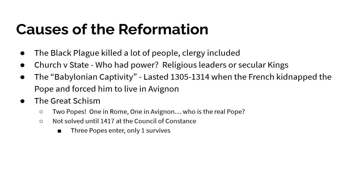This whole thing isn't going to be solved until 1417 at the Council of Constance. At the Council of Constance, there are not one, not two, but three Popes present. Benedict XIII was never able to actually quit — he was pushed to the side. Clement VIII and John XXIII all claim to be the real Pope. An election is held, one Pope survives the meeting, and it's not any of those three — it's a brand new Pope named Martin V. Three Popes go in, one comes out, and it's not even one of the original three, which weakens the Catholic Church considerably.